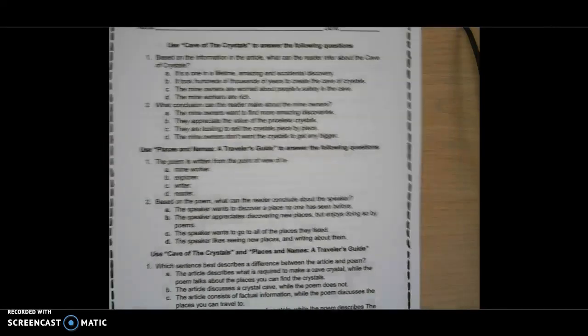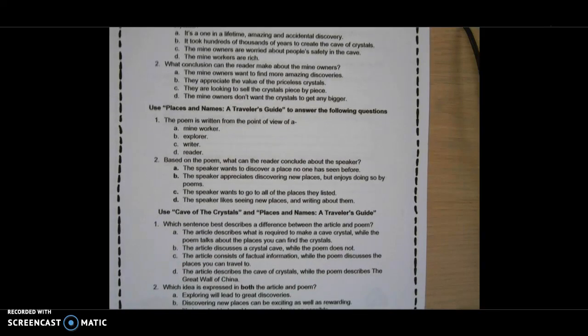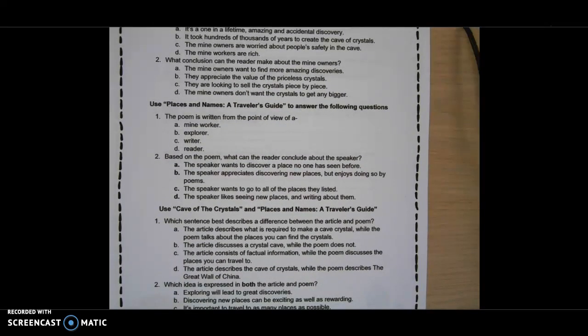Use Cave of Crystals and Places and Names, a Traveler's Guide. 1. Which sentence best describes the difference between the article and the poem? A. The article describes what is required to make a cave of crystals, while the poem talks about the places you can find the crystals. B. The article discusses a crystal cave, while the poem does not. C. The article consists of factual information, while the poem discusses the places you want to travel. Or D. The article describes the cave of crystals, while the poem describes the Great Wall of China.